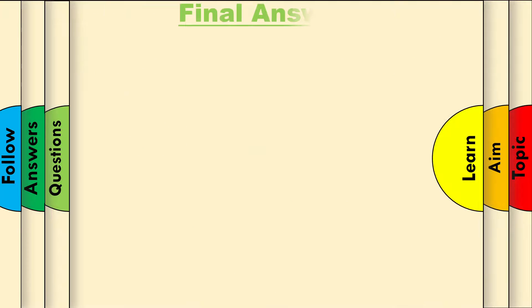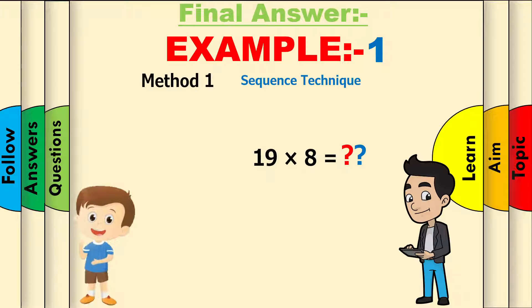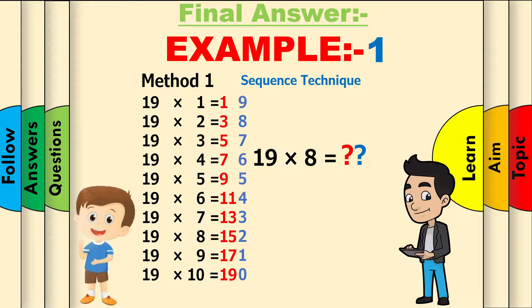Final answer, Example 1. 19 times 8 equals what? Let's use method 1, the sequence technique. 19 times 8 equals 152. It's correct.